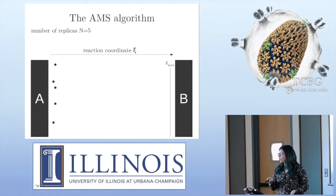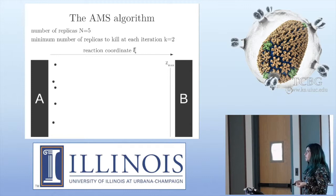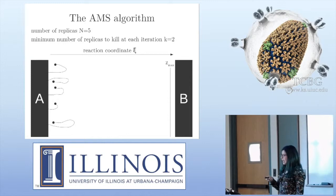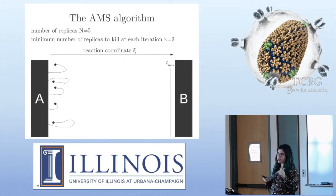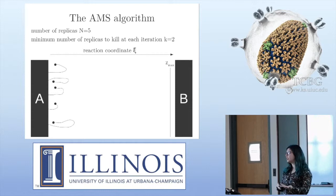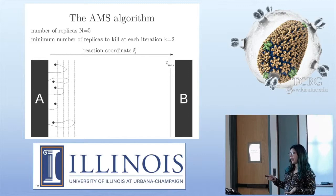You start with N replicas — here I'm showing five. These are just points in the neighborhood of A. You also have another parameter K, the minimal number of replicas you're going to kill at each iteration. You run the simulation and stop when you enter A or B. Typically you're going to enter A because you're just in the neighborhood of A.